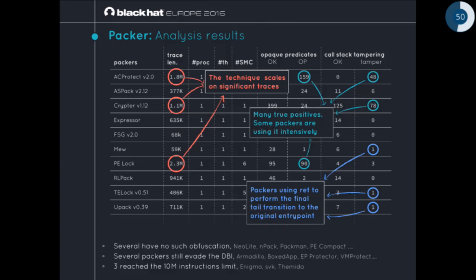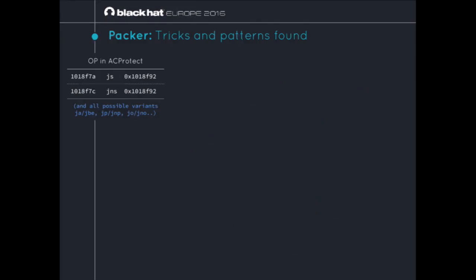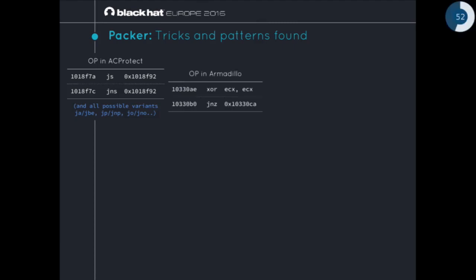A surprising finding: some packers had only one ret instruction tampering — these were packers doing the tail transition to the original entry point via a push and ret instruction, so the ret was detected as tampered. In AC Protect, we found plenty of opaque predicates — chains of two strictly exclusive conditions: GS/GNS, and all possible alternatives like GP/GNP, GO/GNO, and so on. We also found XOR ECX, ECX — obviously always zero, so always taking one branch. Primitive, but still working.